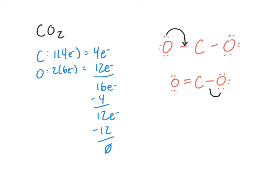So we're going to move electrons from the other oxygen as well, forming another double bond between carbon and the second oxygen, leaving two lone pairs on that oxygen. Now when we count: each oxygen has 8 electrons, and carbon now has 8 electrons as well. Every atom has an octet. This is when you have to use double or triple bonds — when you've used all your electrons but some atoms don't have octets, you share electrons between atoms in multiple bonds rather than leaving them as lone pairs.